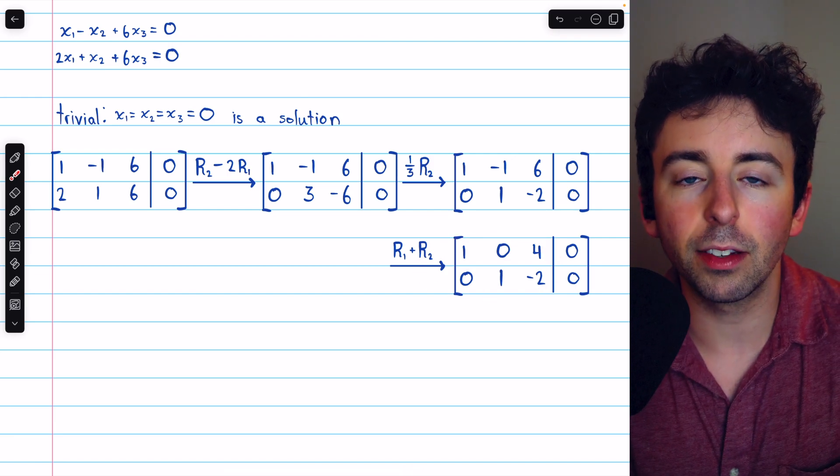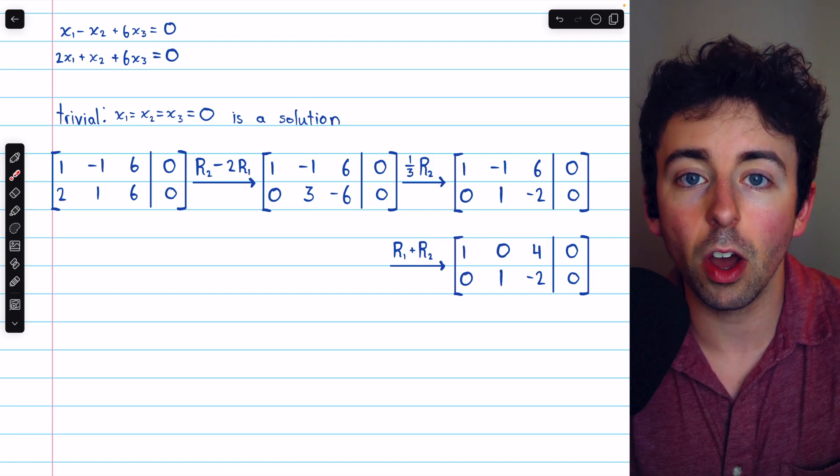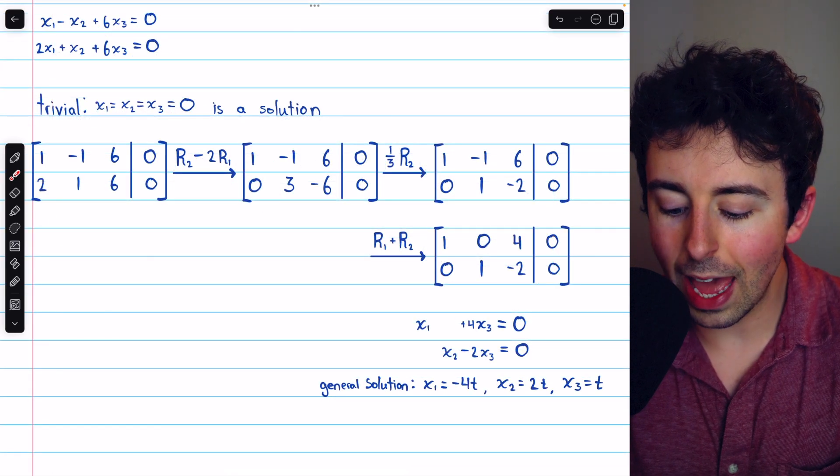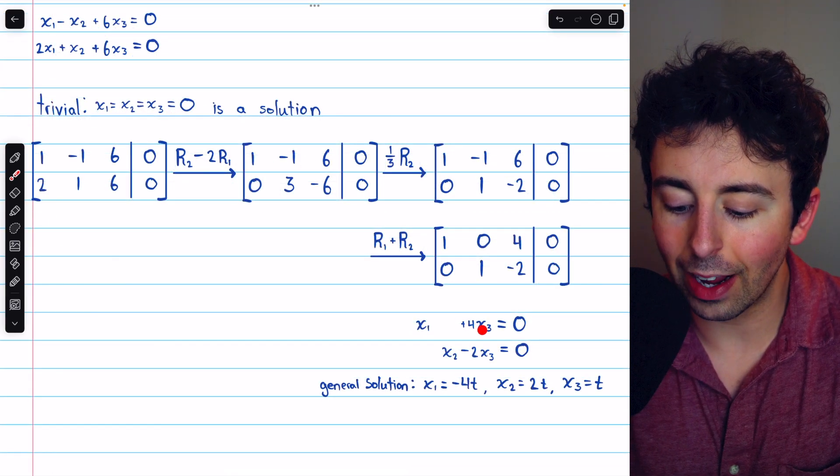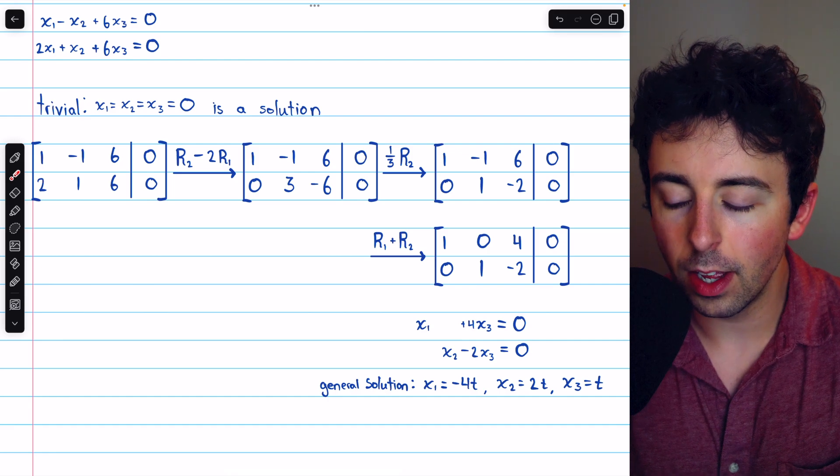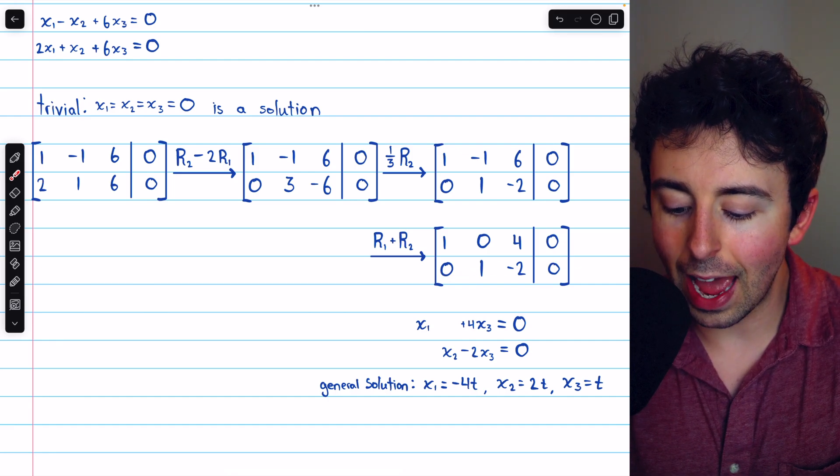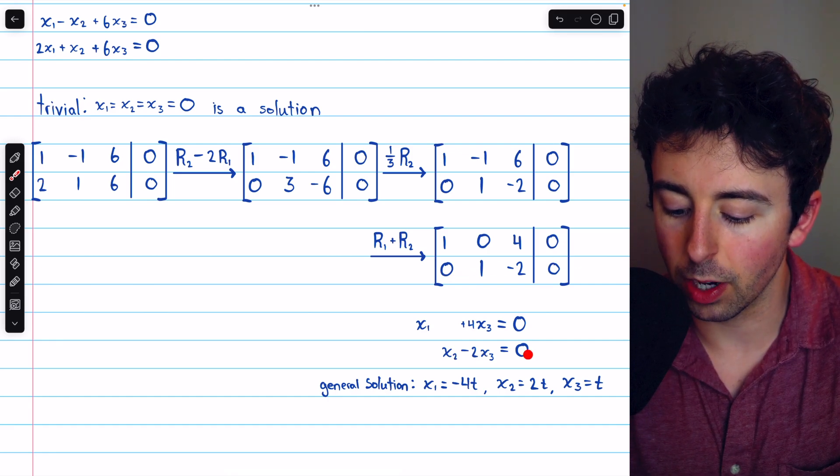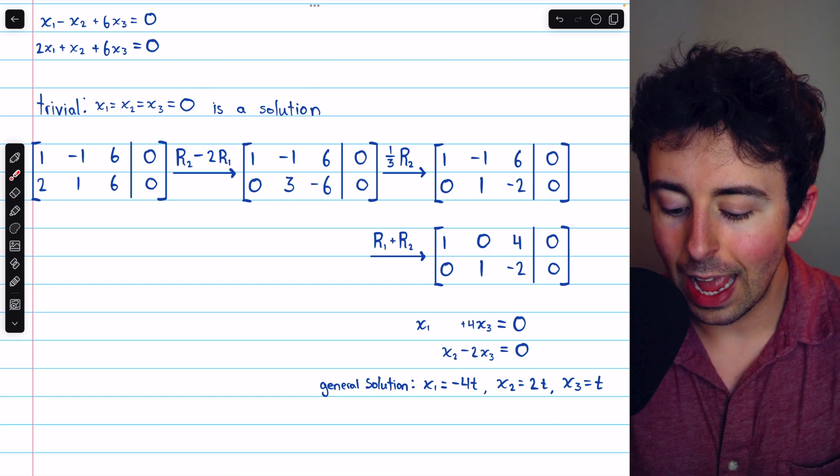This is in reduced row echelon form. And from here, we can describe all solutions of the homogeneous linear system. From row one, we have that x1 plus 4x3 equals zero. From row two, we have that x2 minus 2x3 equals zero.